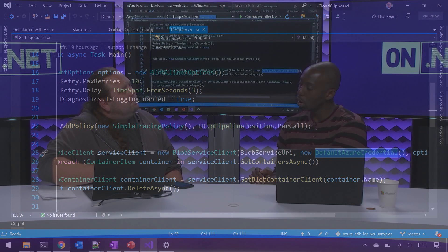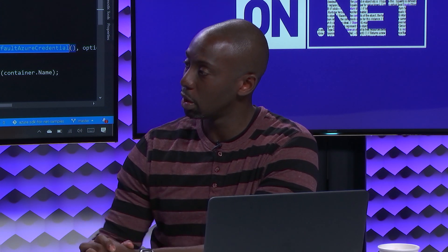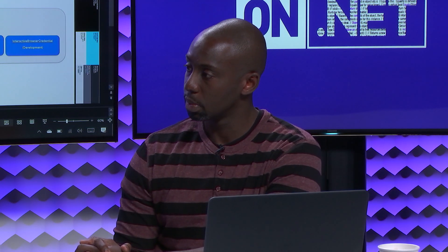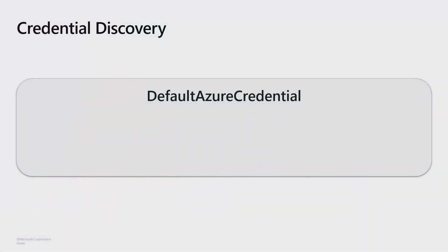I'm assuming it's using a particular flow as it's authenticating. What types of different flows are available inside of this library? Let me talk a little bit about what the Default Azure Credential flow is first, and then we can talk about all the different mechanisms that are available as well. The Default Azure Credential is an actual flow of authentication — we're going to try a bunch of different mechanisms in order to authenticate.